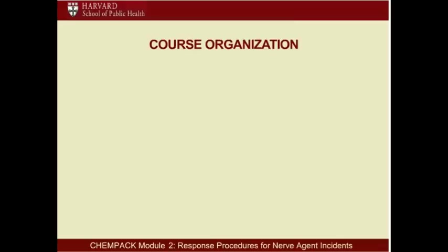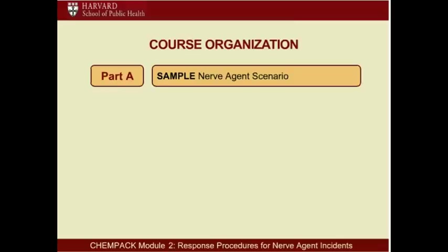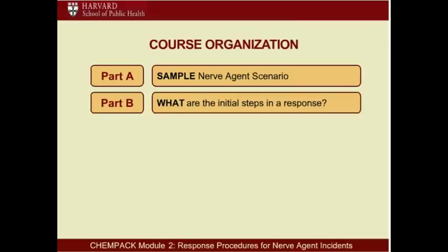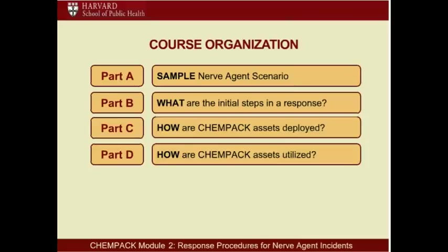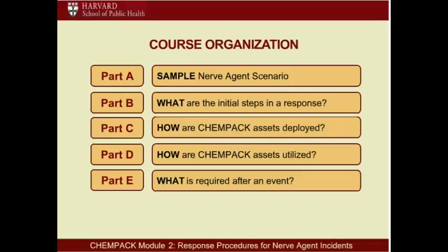This course is organized into five parts. We'll start with a sample nerve agent scenario. In Part B, we'll discuss the initial steps in a response to a nerve agent incident. Part C will explain how ChemPAC assets are deployed. Part D will explain how ChemPAC assets are utilized and describe signs and symptoms of nerve agent exposure. Part E will discuss the after-action documentation required after an event. A final summary will provide a quick review of key concepts.